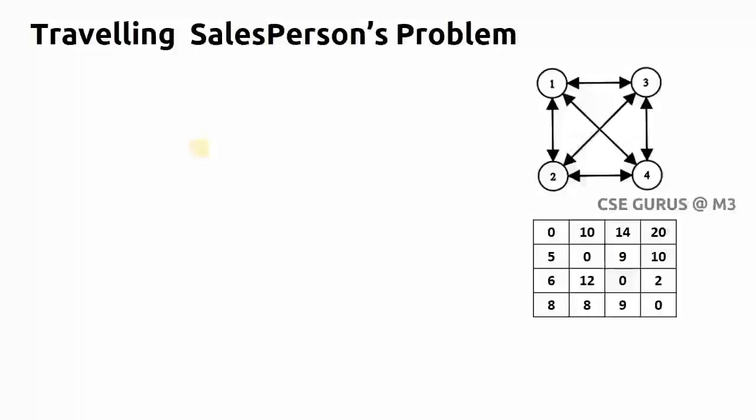Hi friends, welcome to the class of design and analysis of algorithms. Coming to the next problem, the traveling salesperson's problem. Let us suppose if I am at vertex 1, I need to start from vertex 1, visit the remaining vertices exactly once, and finally come to my source vertex. This path we need to find, the shortest path.